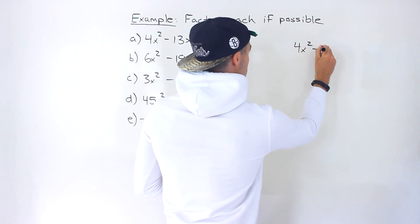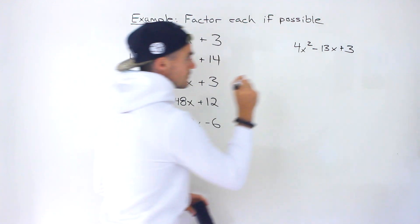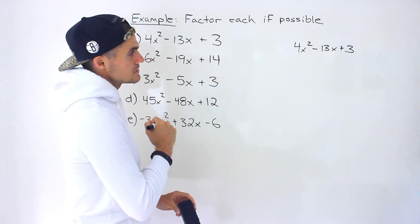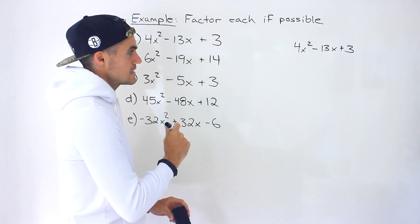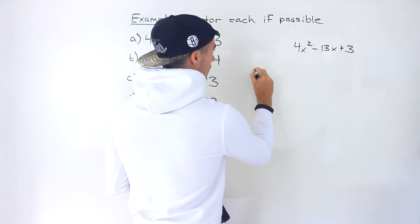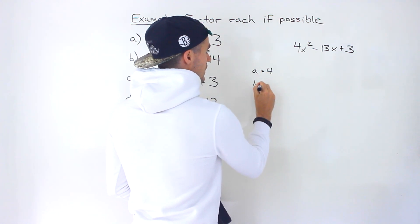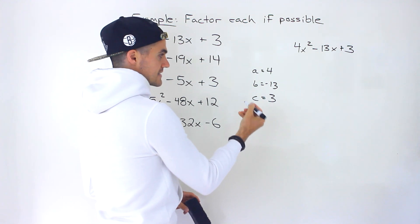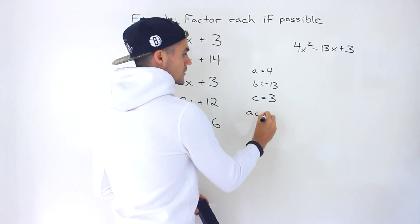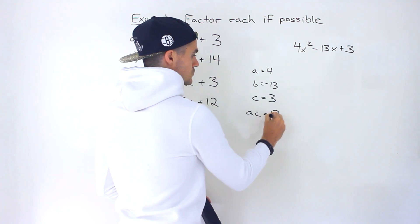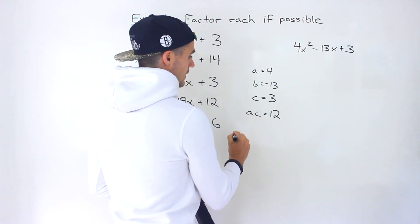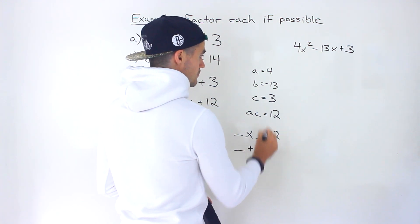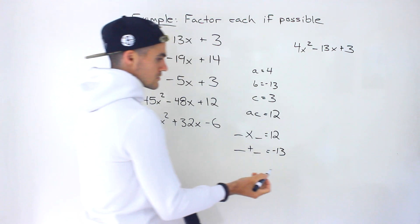Let's write out this first quadratic. First thing we always check: can we take out a greatest common factor? We can't in this case. So going into decomposition: A value is 4, B value is negative 13, C value is 3. Next step, we get the AC value, which is 3 times 4, giving us 12. Now we've got to find two numbers that multiply to positive 12 and add up to that B value of negative 13.